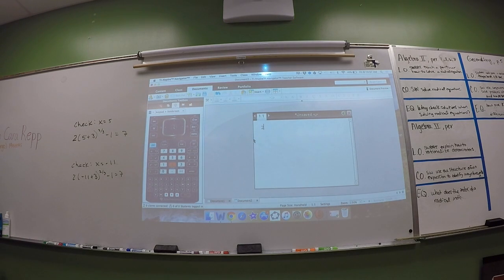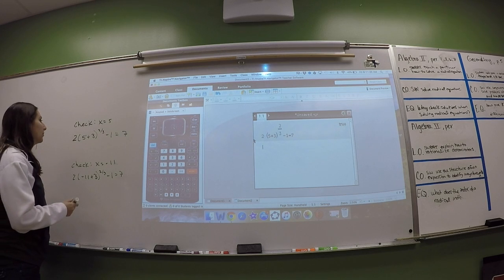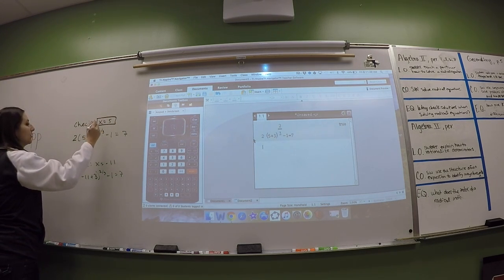So you're going to type in 2, parentheses, 5 plus 3. Then you're going to go right here, outside your parentheses, and click this little caret button. Raise it to the two-thirds power. To do that, hit control, divide to create a fraction. Put in a 2 and a 3. Click the over to the right button. Minus 1, and then equals 7, and hit enter. If it says true, that means it's right. If it says false, that means it's wrong, or I guess it could mean you didn't use your calculator right.